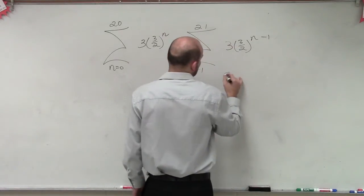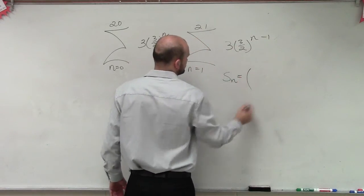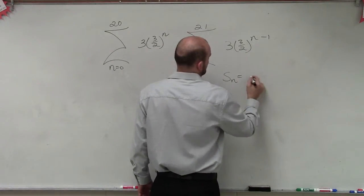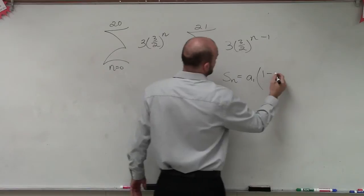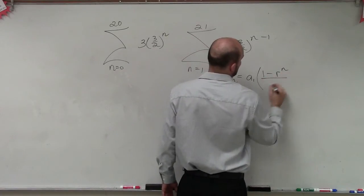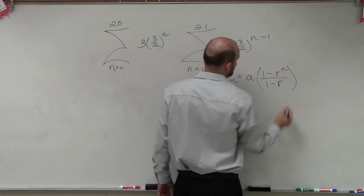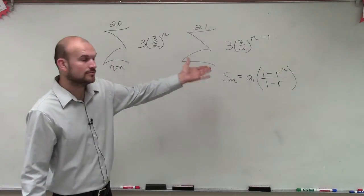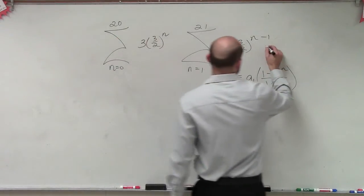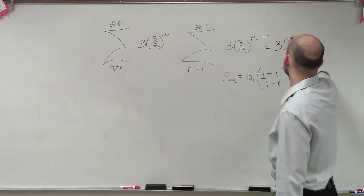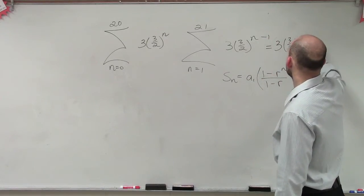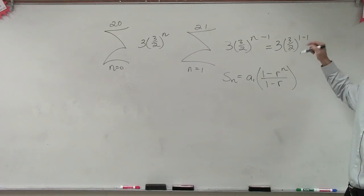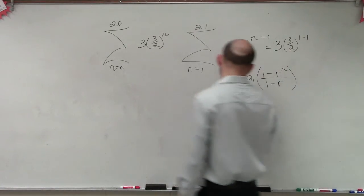So now we can use the partial sum, which is going to be a sub 1 times 1 minus r to the n divided by 1 minus r, OK? So now we know our a sub 1, which we need to evaluate. So let's do that. So a sub 1 would be 3 to the 3 halves times 1 minus 1, which that's going to go to 0. 3 halves raised to the 0 is 1. 1 times 3 is 3. So therefore, we're left with 3 times 1 minus 3 halves to the 21st power, all over 1 minus 3 halves.